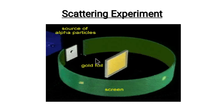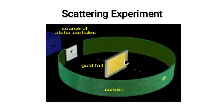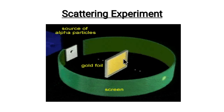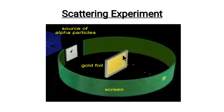The alpha particles are first bombarded onto a thin sheet of gold foil. The alpha particles are obtained from a radioactive source. After that, a fluorescent screen is placed around the gold foil.